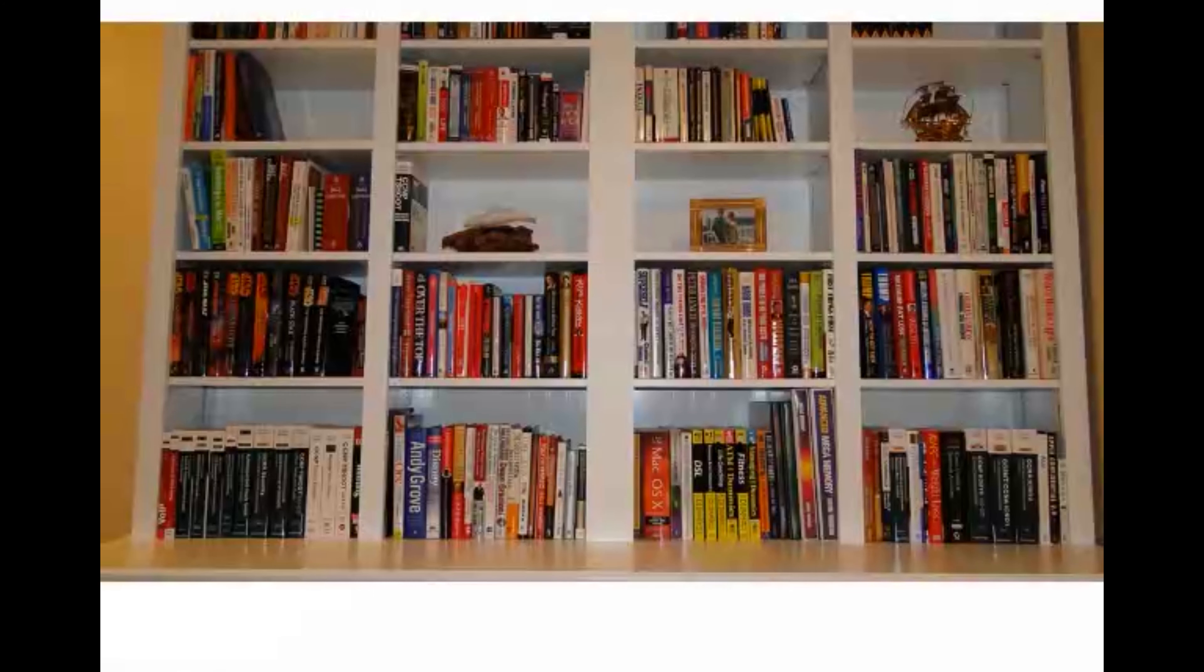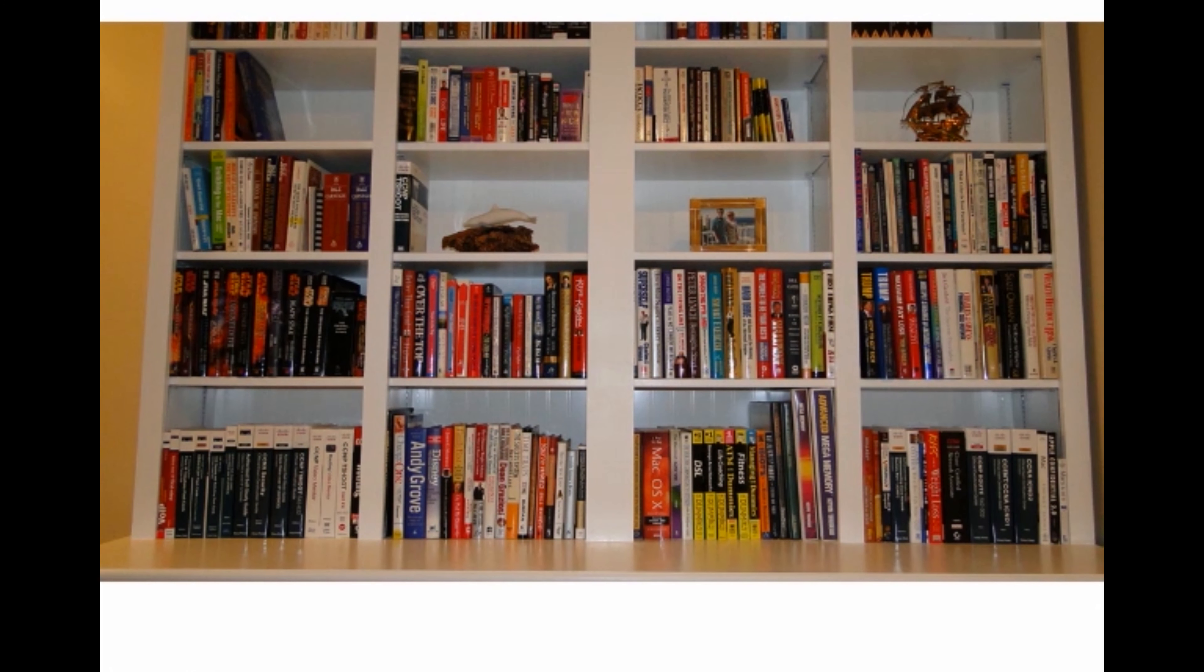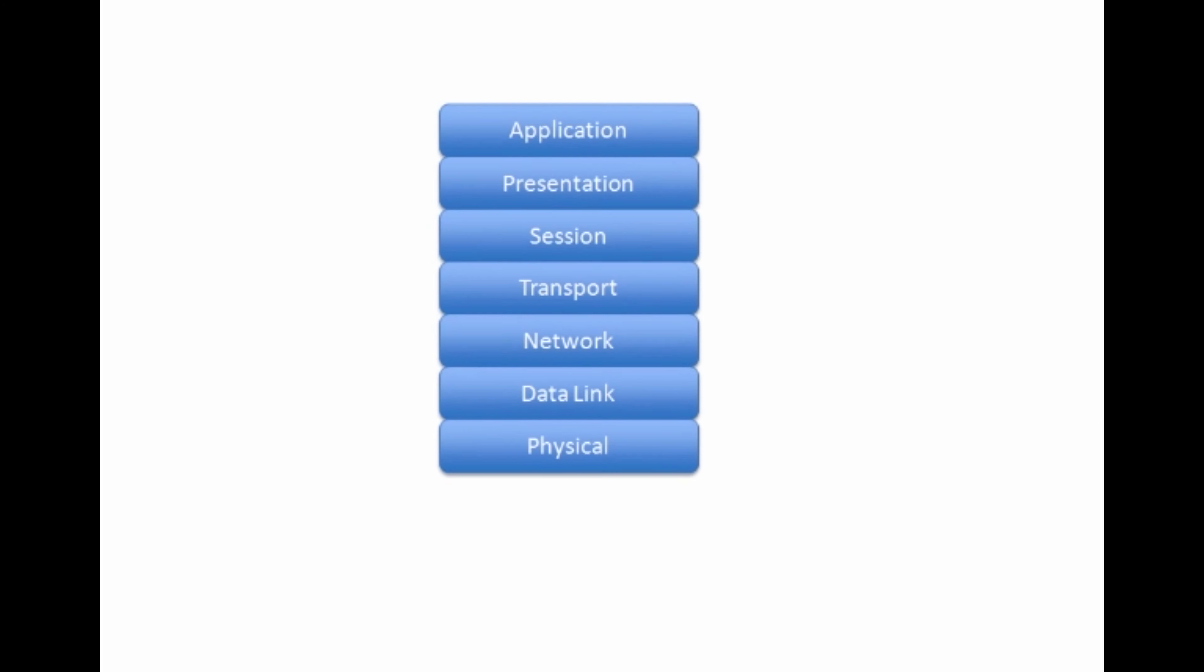Hey welcome back everyone, it's Kevin again. In our last video I took you to my bookshelf and explained how this bookshelf could be used as a metaphor for the OSI model. We said that the OSI model consisted of seven different layers. Let's check out those layers as a reminder.